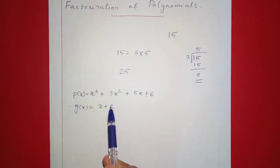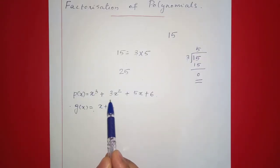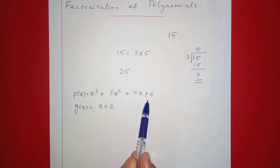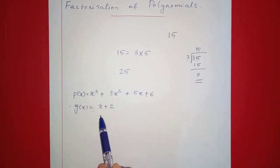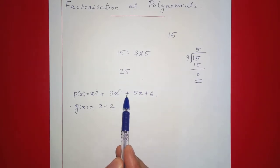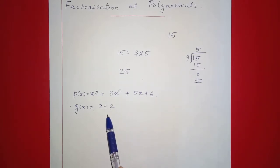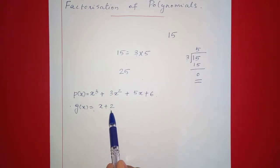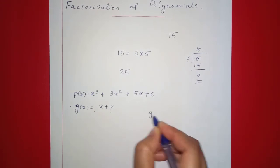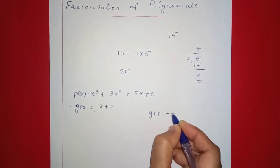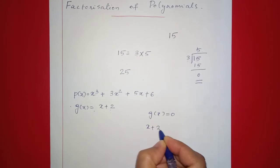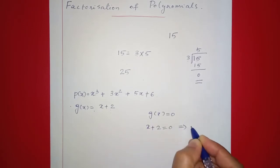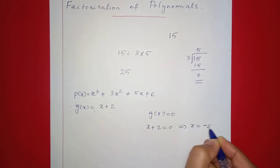Let's take an example. P of x is equal to x cubed plus 3x squared plus 5x plus 6. G of x is equal to x plus 2. Let's check if G(x) is a factor of P(x). If we get remainder 0, then G(x) divides P(x). We set G(x) equal to 0, so x plus 2 equals 0, which implies x equals negative 2.